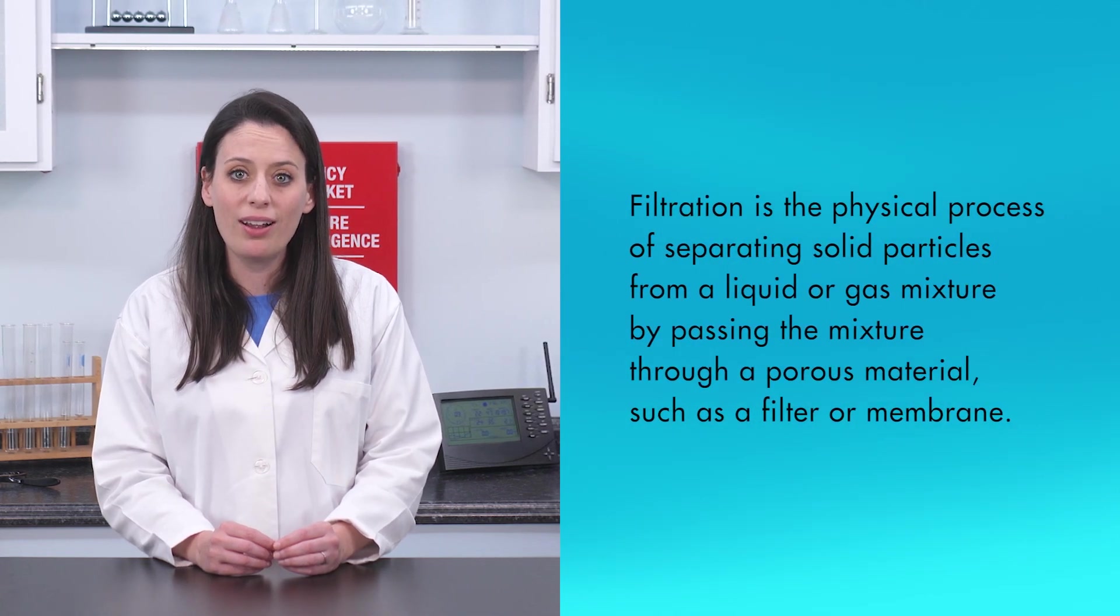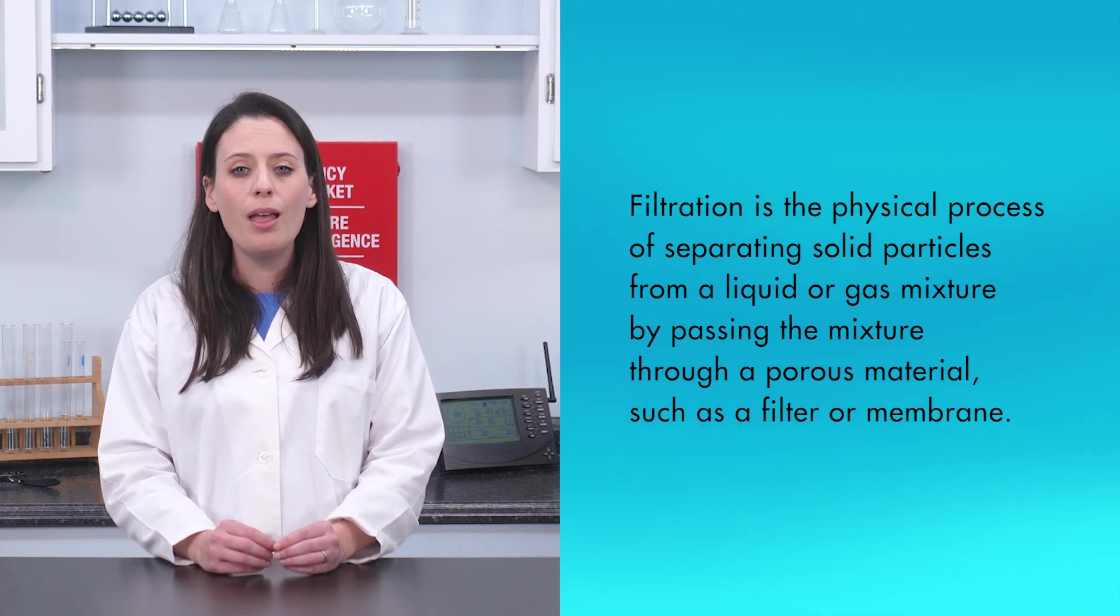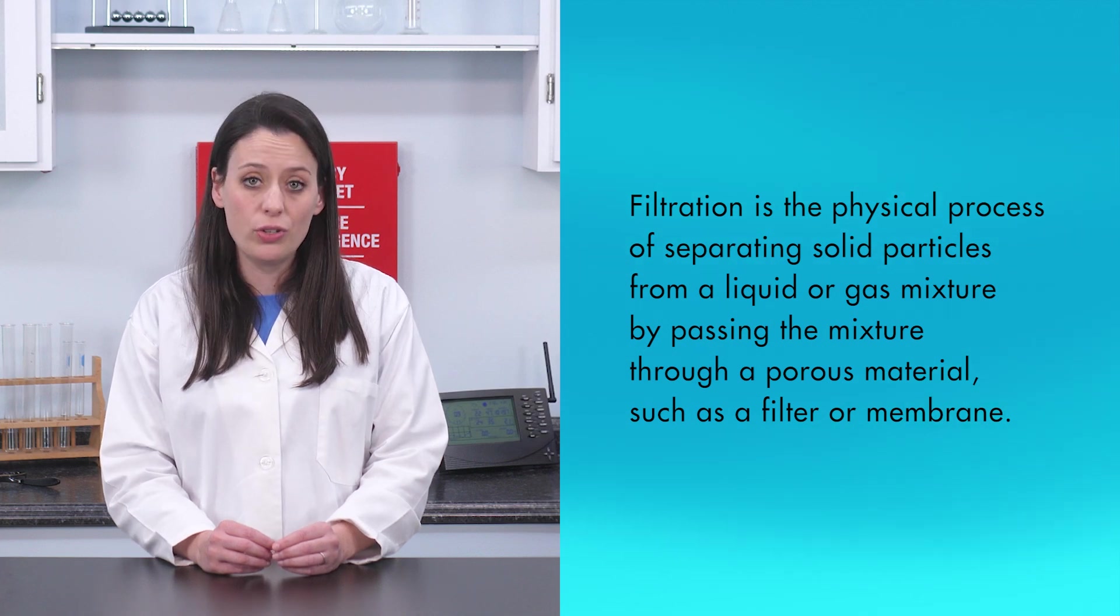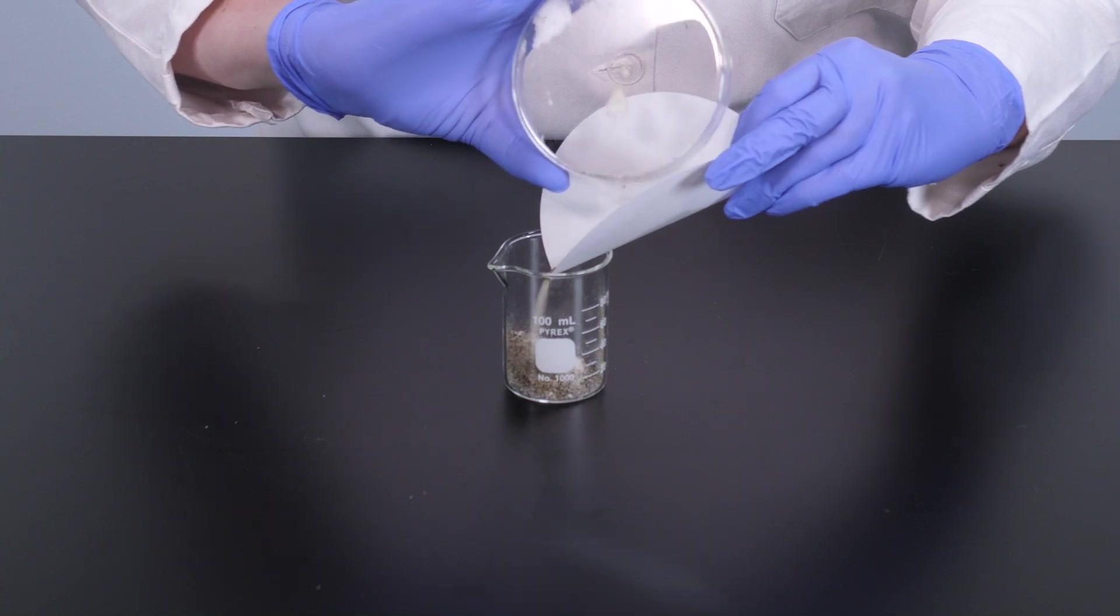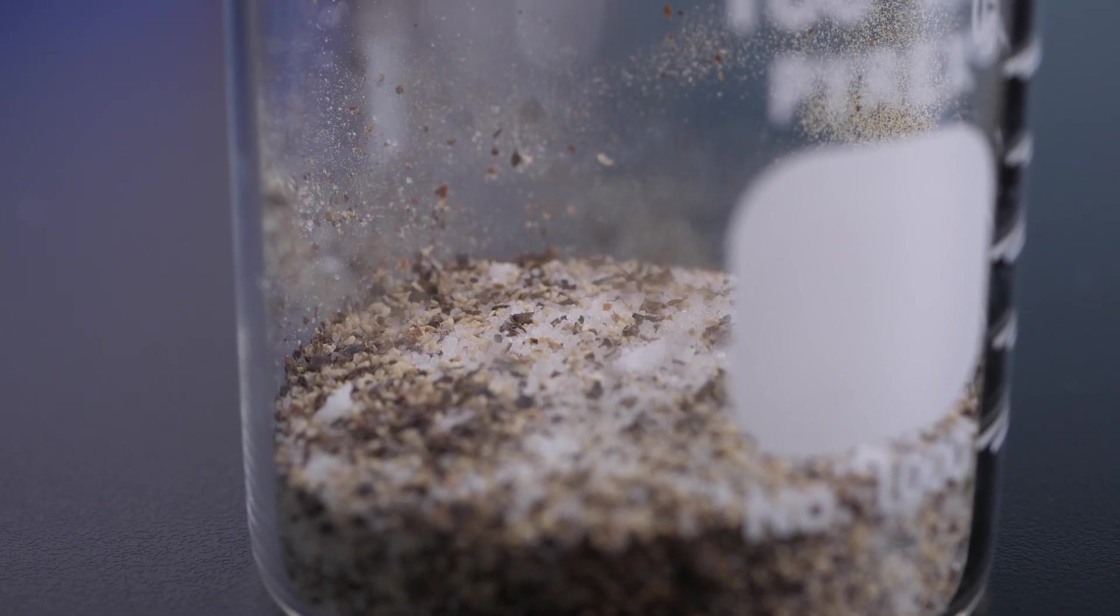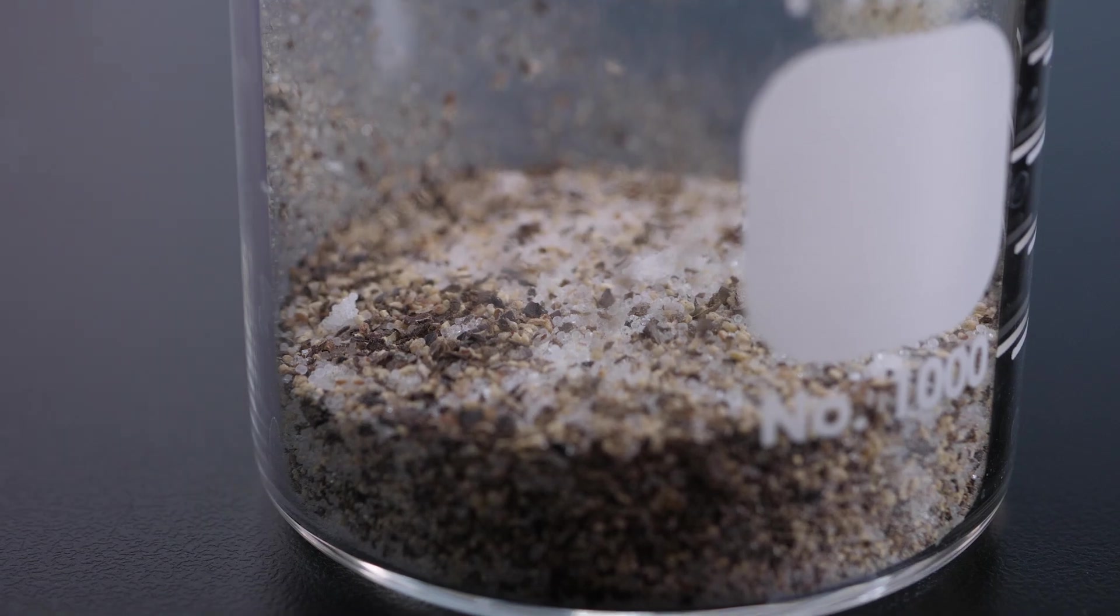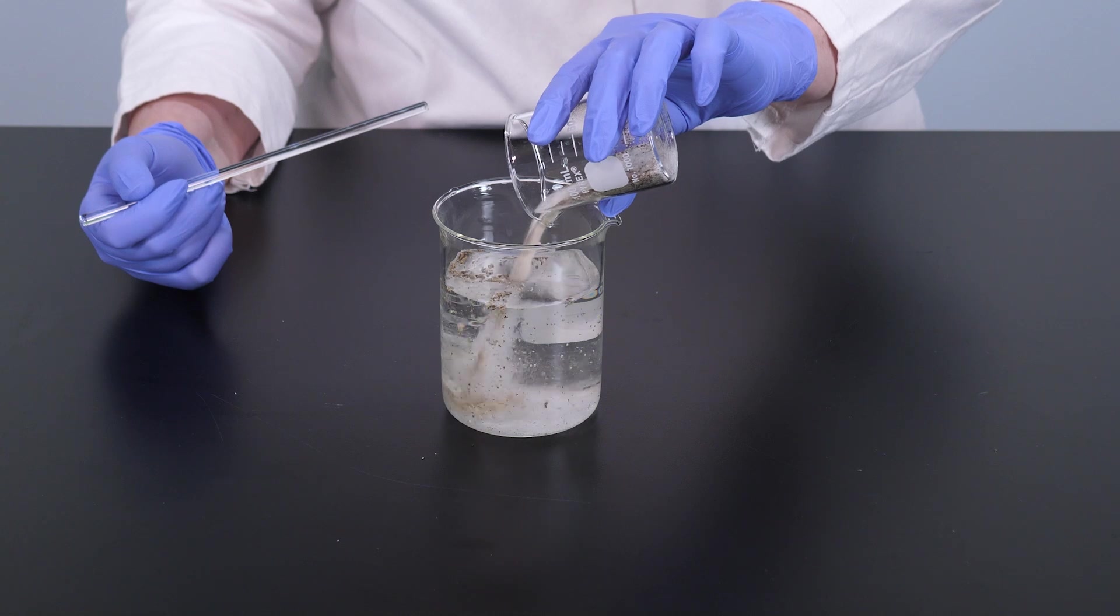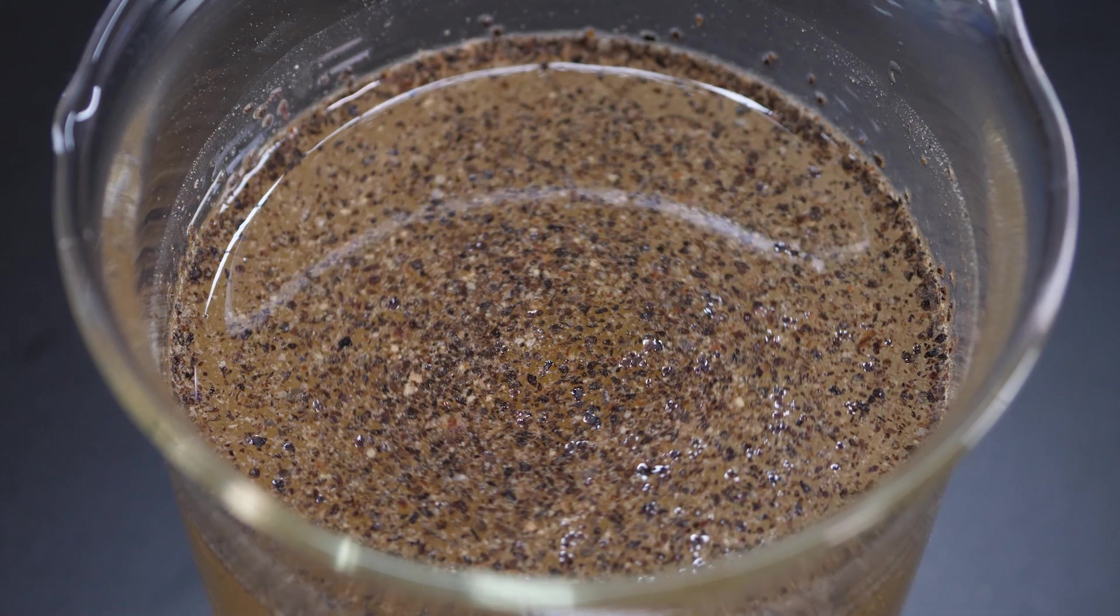Filtration is the physical process of separating solid particles from a liquid or gas mixture by passing the mixture through a porous material, such as a filter or membrane. Since filtration separates solid particles from a liquid, you may be wondering how we will use filtration to separate salt from pepper, two solids. Because salt and pepper are both solid, we need to first add the mixture to water. Salt is soluble in water, but the pepper grains remain floating in the solution.